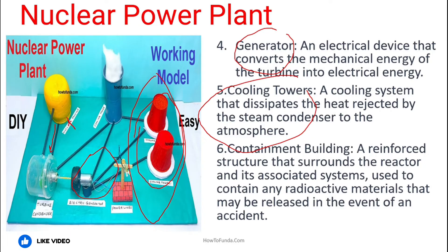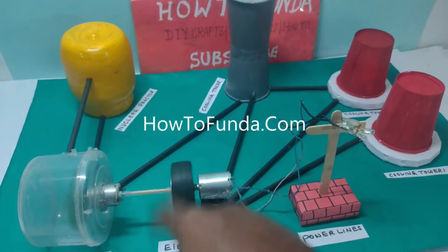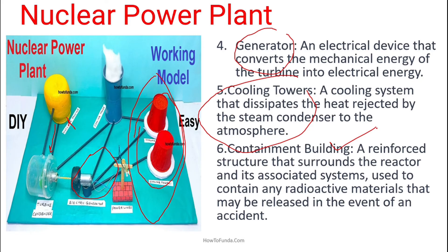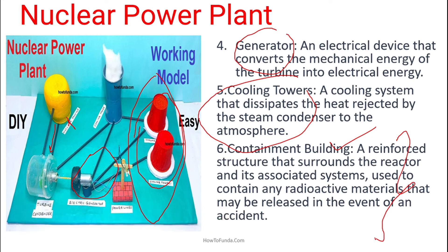There is also a sixth component: the containment building. A nuclear power plant is a very risky project because nuclear fusion emits radiation as well. In order to protect all surrounding places, the nuclear power installation should be surrounded by a proper containment building to safeguard everything effectively without any accidents.